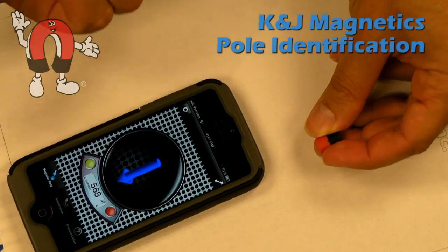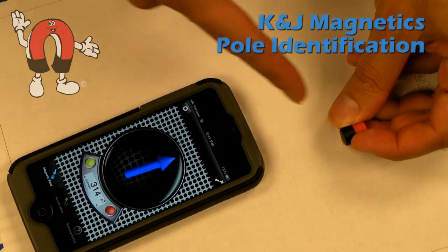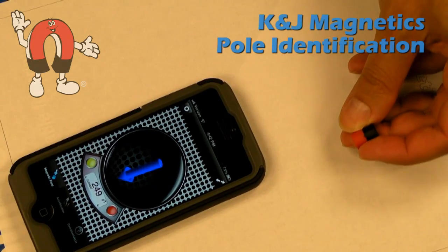When I stick north towards the top of the phone, it points away. South towards the top of the phone, the arrow points to that south pole of the magnet.